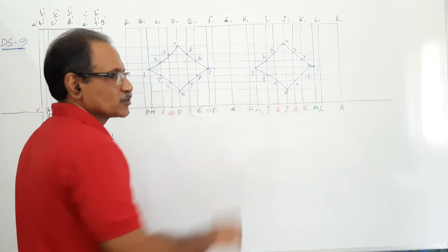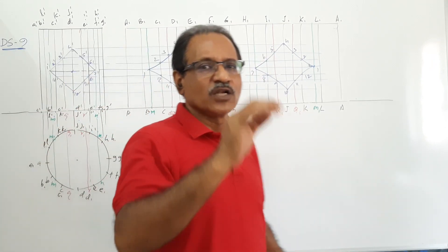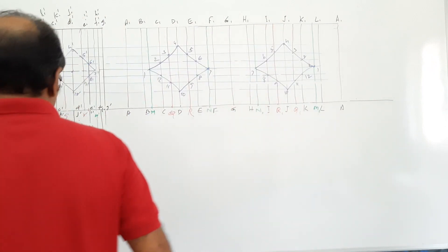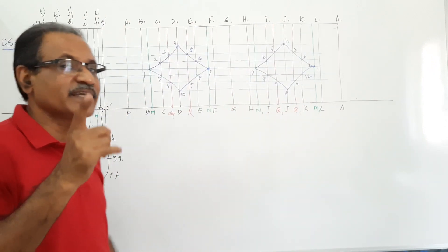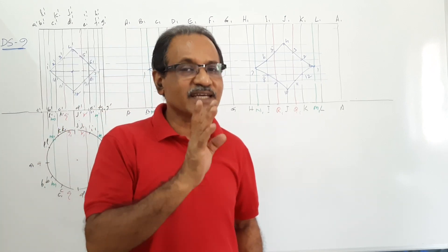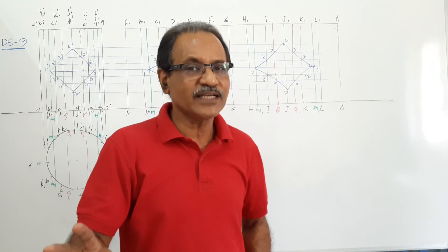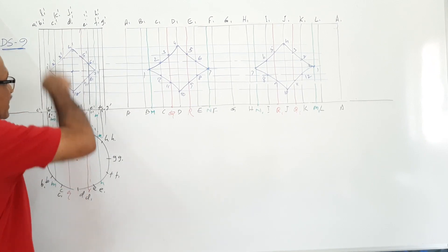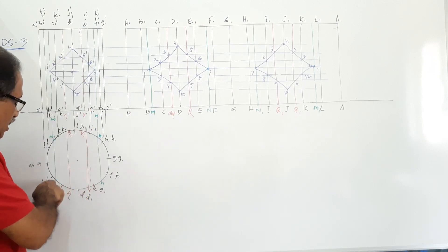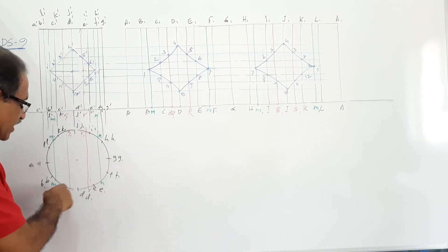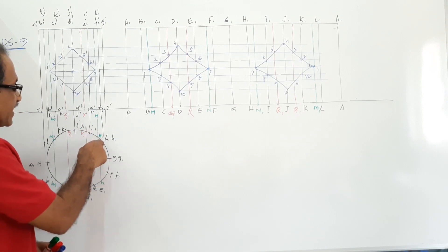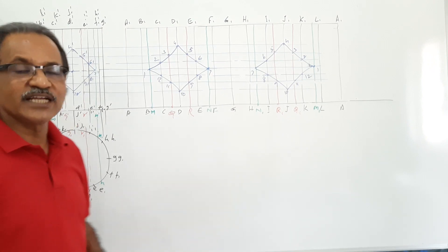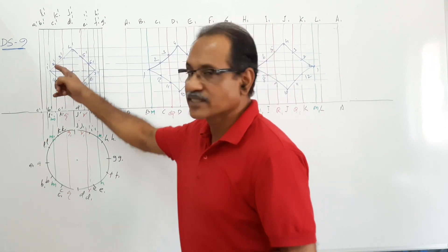This is a very important question that has come numerous times in exams. To get the correct curve, it is 100% necessary to divide the cylinder into 12 equal parts — many textbooks use eight parts, which is a disadvantage. Additionally, we take eight extra generators: between d and c, c and d, d and e, e and f, and on the back side h and i, i and j, j and k, and k and n. These are the generators on which the points of the square hole lie.